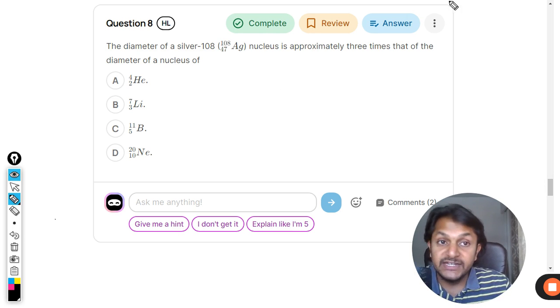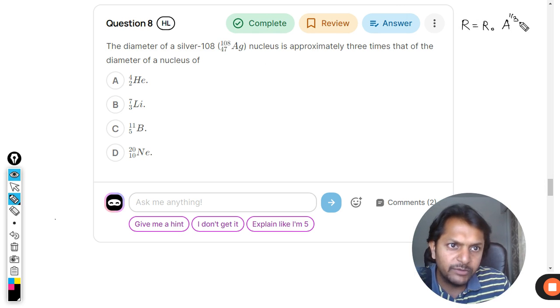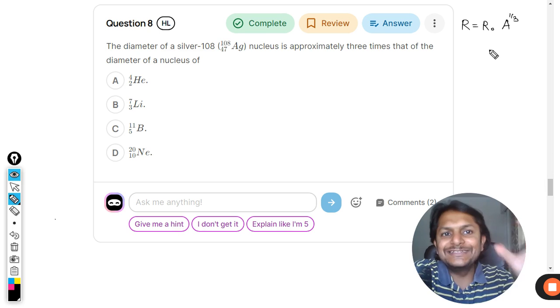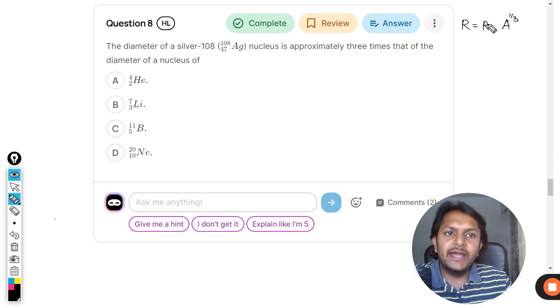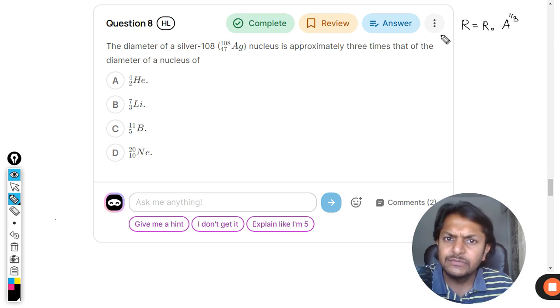So there is a formula given in the data booklet. Don't get confused. R is equal to R0 A raised to the power of 1 by 3. So A is the mass number, and this is like the radius or the diameter, one is the same thing.